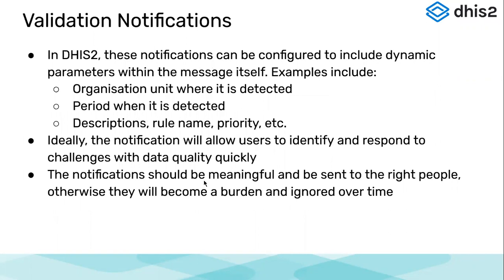In the previous slide, I mentioned notifications can have dynamic parameters in the message itself. When creating a notification, you create a message body, and in that message body you have some dynamic parameters which you can pre-select and the system will fill those values and send the notification accordingly. For example, you can include the clinic where the rule was violated, the period for which the data was reported, the name of the rule, and the priority — these are variables available for configuration.